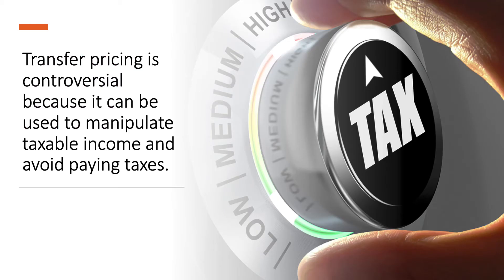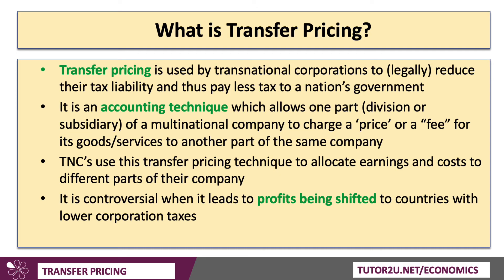Transfer pricing is controversial because essentially it can be used to manipulate the taxable income that businesses face, and therefore the ways in which businesses in particular avoid paying tax. Transfer pricing is used by transnational or multinational corporations to legally reduce their tax liability, and thus they pay less tax to a nation's government. It's basically a form of accounting which allows one part of a business — a division or subsidiary of an international company — to charge a price or fee for goods and services to another part of the same company, operating in a different country.